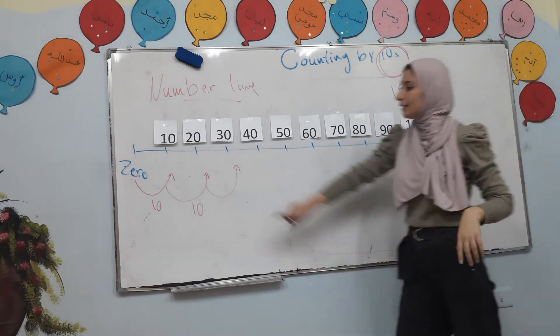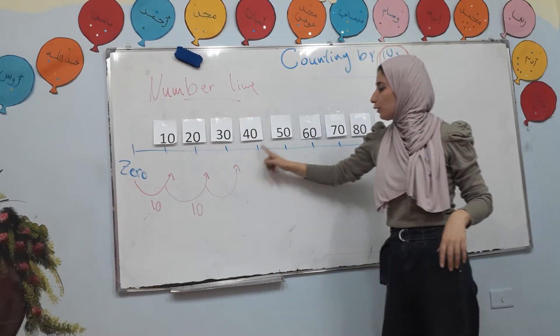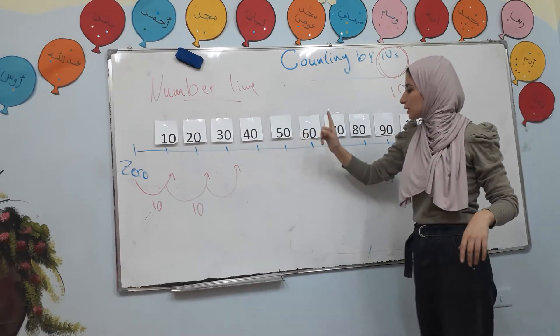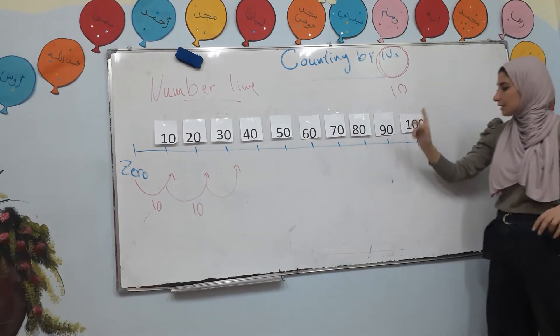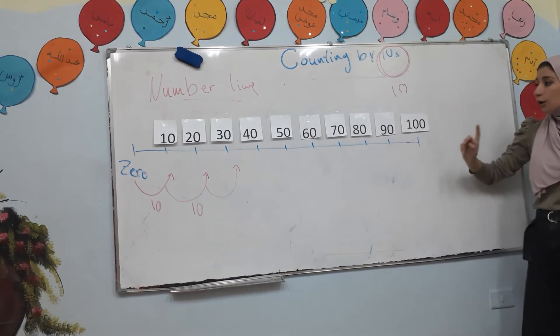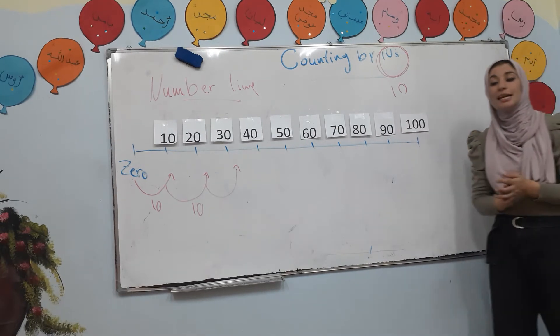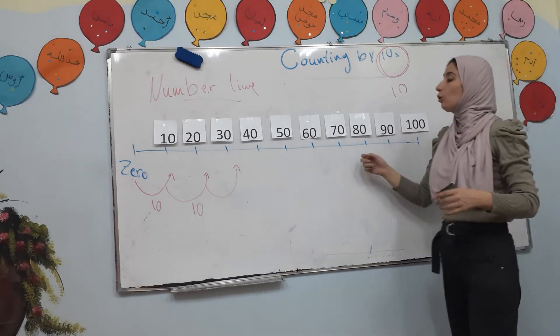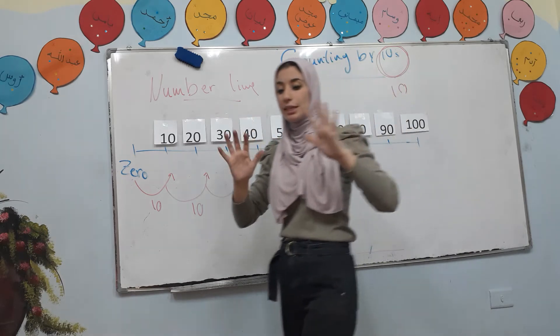Again: 10, 20, 30, 40, 50, 60, 70, 80, 90, 100. Yes, it's called counting by 10!